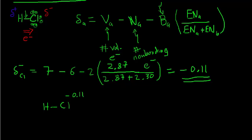...the partial positive charge on the Hydrogen will be equal but opposite in sign. So 0.11 for the partial charge on the Hydrogen. And that's how we can calculate partial charges for simple diatomic molecules.